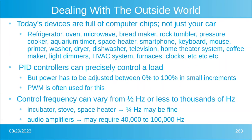Today's devices are full of computer chips — not just your car, but your refrigerator, microwave, bread maker, air conditioner, furnace, smartphone, washer, dryer, and dishwasher. How does a tiny computer chip operate a clothes dryer or dishwasher? We go back to PID controllers — they can precisely control load. Power has to be adjusted between zero and a hundred percent, for example to keep your dishwasher temperature correct in small increments. Most often we use PWM for this. The control frequency can vary from half a Hertz or slower to thousands of Hertz, depending on what you're trying to control.